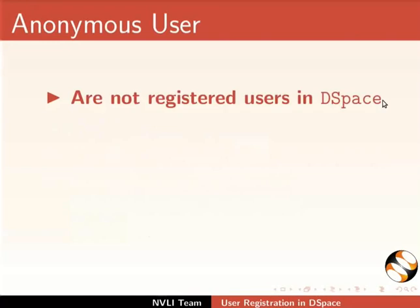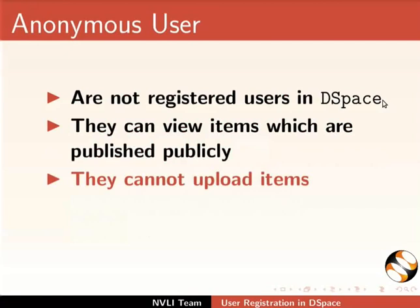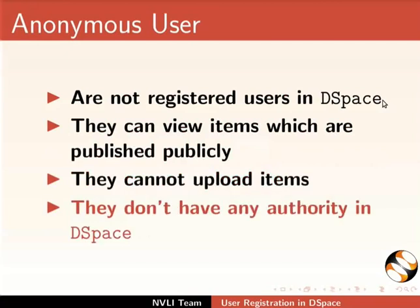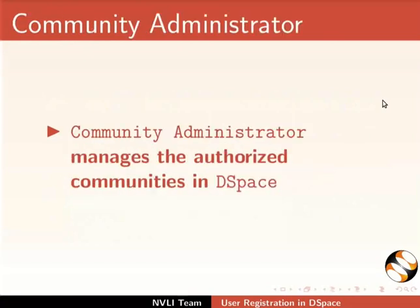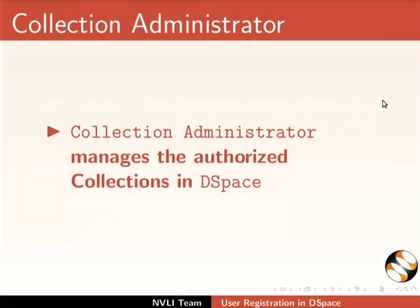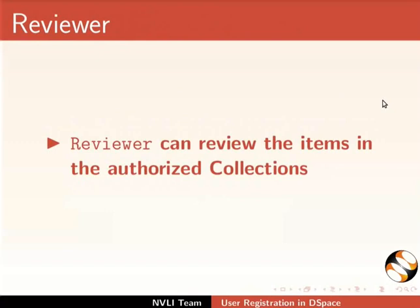Anonymous users are not registered users in DSpace. They can view items which are published publicly, but they cannot upload items and they don't have any authority in DSpace. Administrator users can manage E-persons, communities, collections, items, and other administrative activities. Community Administrator manages the authorized communities in DSpace. Collection Administrator manages the authorized collections in DSpace. Submitter can upload items in the authorized collections, and Reviewer can review the items in the authorized collections.